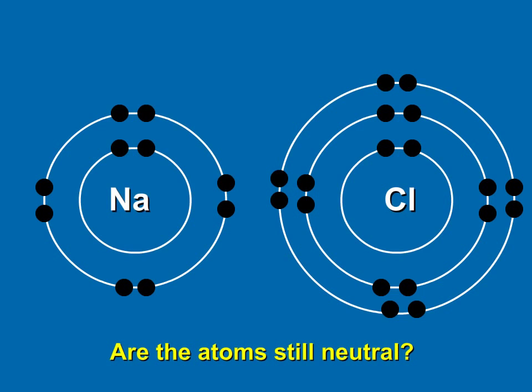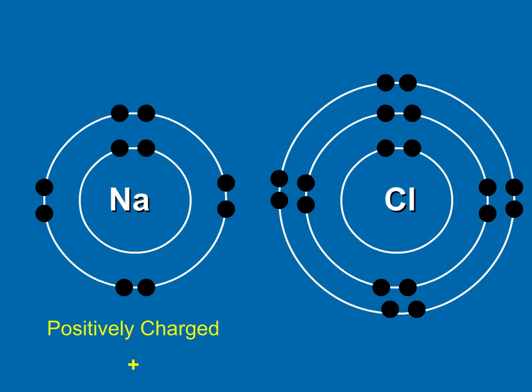But are the atoms still neutral? Remember, if the protons and electrons equal each other, the atom has a neutral charge. Well, are they? No. Since sodium lost an electron, it now has ten negative electrons and eleven positive protons. Overall, that gives it a positive charge. Chlorine gained an electron. So it now has eighteen negative electrons and seventeen positive protons, making it negatively charged.